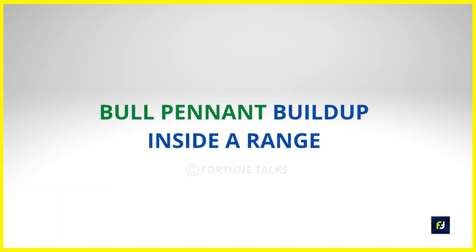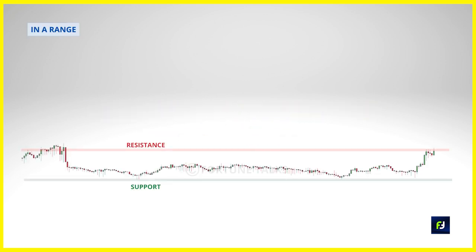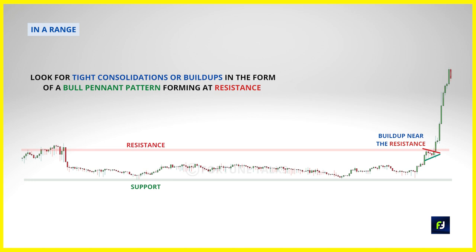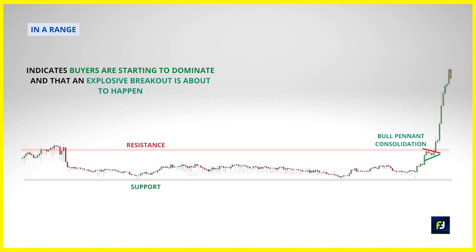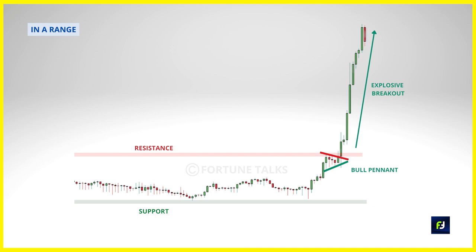For a range market, instead of buying highs and lows within the range, wait for the range to potentially end. Look for tight consolidations or buildups in the form of a bull pennant pattern forming near the resistance level. When you see a bull pennant forming at resistance, it signals buyers are starting to dominate and an explosive breakout is imminent. Enter above the breakout candle or when price closes above the resistance. Stop loss and targets are the same as discussed. Since there's no valid trend, you can use a tighter moving average such as a 20-period for trailing stop loss.